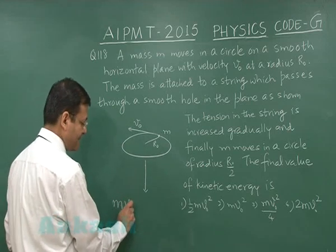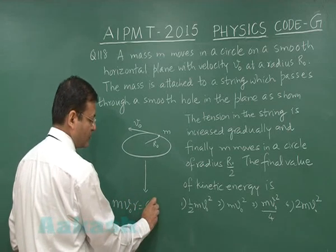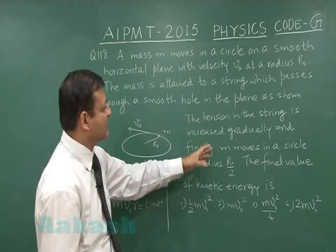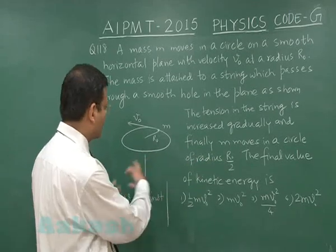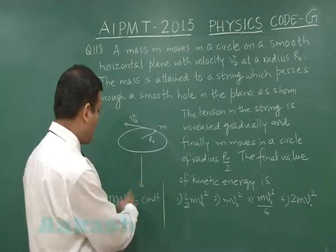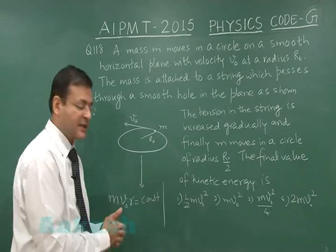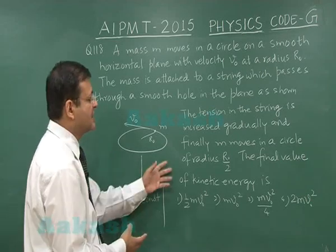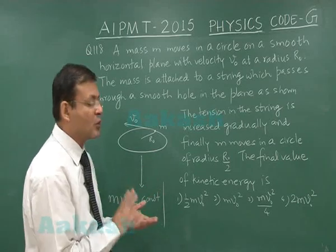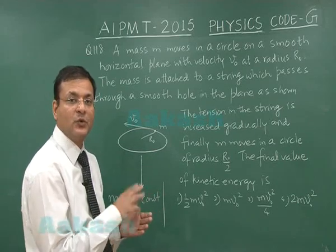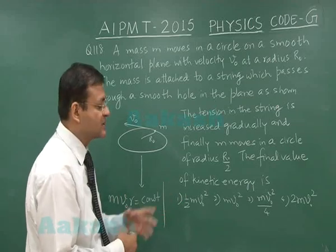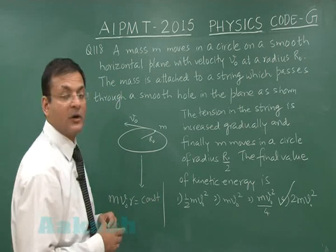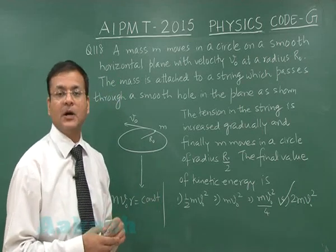The tension in the string is increased gradually. MVR is constant. If you're increasing the tension, it's coming down to radius R₀ by 2, so radius is halved. The velocity will be doubled because MVR has to remain constant. Now they demand the kinetic energy: half m into 2V₀ squared, so that is 2MV₀² and that is the fourth option. That will be the most appropriate option for question 118.